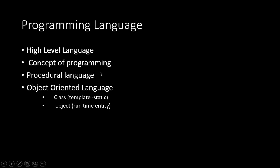Now we have two types of programming languages in general: procedural language and object-oriented language. Procedural language is where we give a procedure step by step and the system solves the problem for you. In object-oriented language, we use the concept of objects. An object is generally how we see things in day-to-day life. For example, I see a car as an object. It has some attributes and also some functions. A car has four wheels, a brake, and so on.